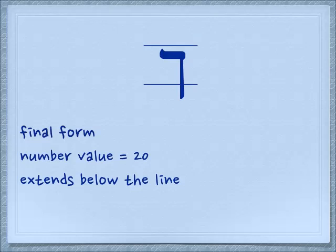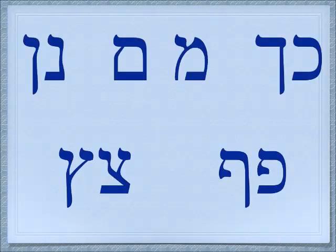You're going to find it under the number value 20, and the kaf extends below the line. Here are the five letters with their final forms. The final forms are called sofit in Hebrew — it just means the last one. Today we have the kaf and the kaf sofit.